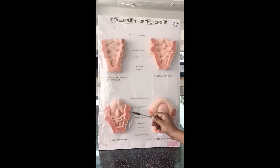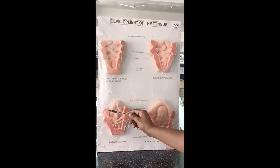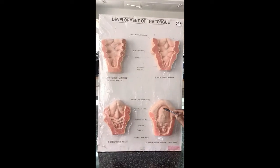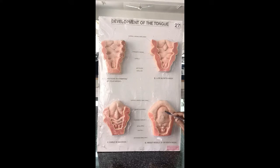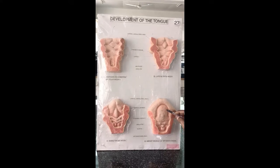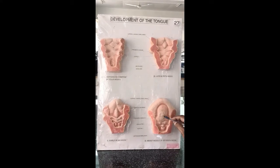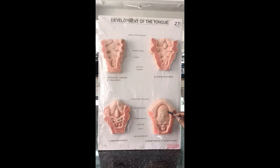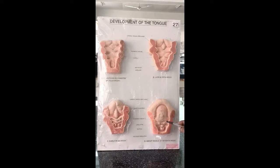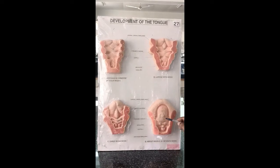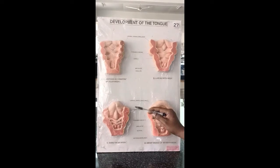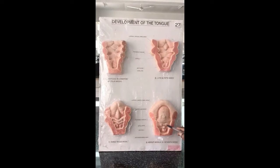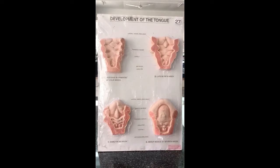These are the different embryological structures which form the tongue. The two lingual swellings fused along with tuberculum impar form the anterior two-thirds of the tongue. The posterior one-third of the tongue is formed by the cranial part of the hypobranchial eminence or cupola. The epiglottis is formed by the caudal part of the hypobranchial eminence.